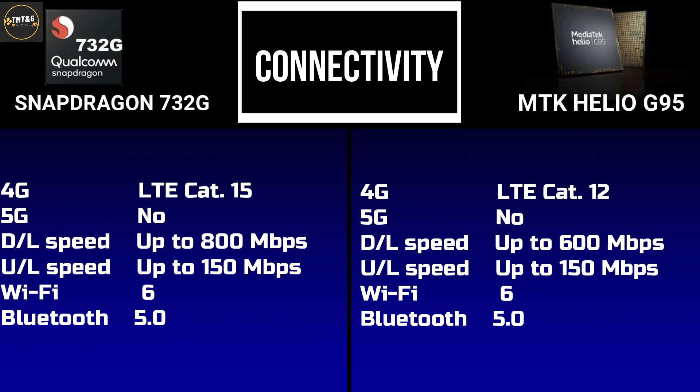For connectivity, both chips support 4G LTE. The Snapdragon 732G supports LTE Cat 15 with download speeds up to 800Mbps, while the Helio G95 supports LTE Cat 12 with download speeds up to 600Mbps. Both have upload speeds up to 150Mbps, and both support Wi-Fi 6 and Bluetooth 5.